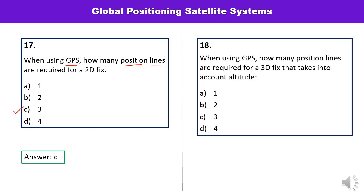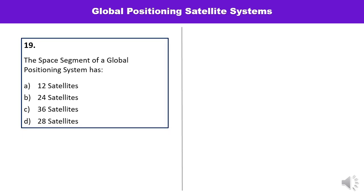Question number eighteen: When using GPS, how many position lines are required for a three-dimensional fix — taking altitude into consideration as well? Four position lines are required, so the correct answer is D. Question number nineteen: The space segment of the Global Positioning System has how many satellites? The space segment of GPS has 24 satellites.